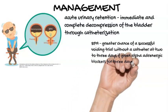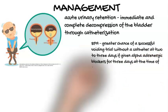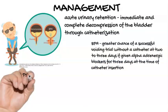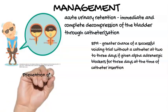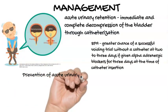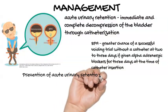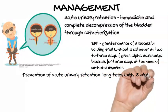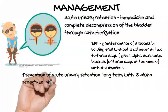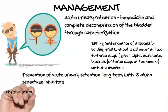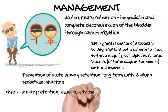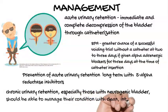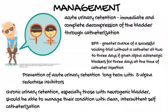Prevention of acute urinary retention in BPH may be achieved by long-term treatment with 5-alpha-reductase inhibitors. Patients with chronic urinary retention, especially those with neurogenic bladder, should be able to manage their condition with clean, intermittent self-catheterization. This technique is considered first-line treatment for managing urinary retention caused by neurogenic bladder and can reduce complications such as renal failure, upper urinary tract deterioration, and urosepsis.